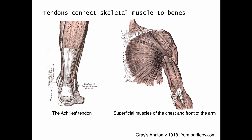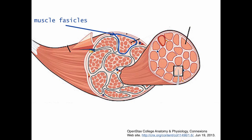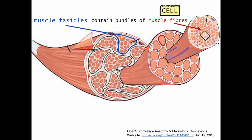Let's have a look at the skeletal muscle. Here we have the tendon and the skeletal muscle. Within the skeletal muscle tissue, there are going to be many muscle fascicles. Here you can see one muscle fascicle, and if we blow it up, this is an enlarged muscle fascicle. Muscle fascicles are going to contain bundles of muscle fibers. This is an individual muscle fiber and its bundles. Muscle fibers are the cells of skeletal muscles.